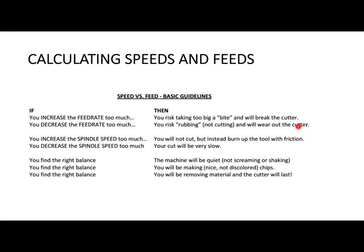If you increase the spindle speed too much, you will not cut but instead burn up the tool with friction. If you decrease the spindle speed too much, the cut will be very slow and sometimes you won't be able to cut through the object at all. To find the right balance: the machine will be quiet, you will be making chips that are nice and not discolored, you will be removing material, and the cutter will last. If you observe otherwise, something you are doing is wrong.